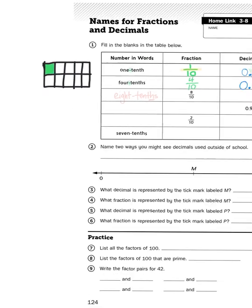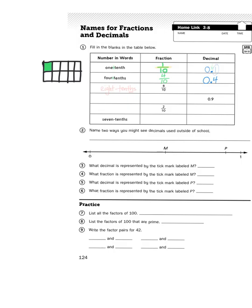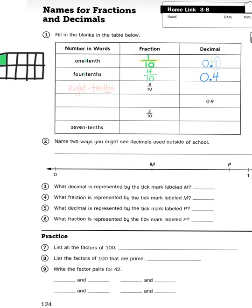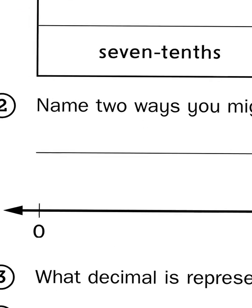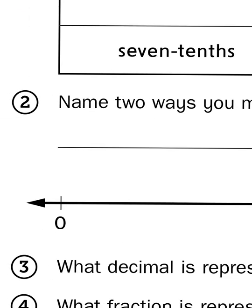Now then, let's take a look at some of these other parts. Number 2 says, name two ways you might see decimals used outside of school. Well, if you've ever been in a store, I bet you've come across all kinds of decimals because in our American economy, we like to talk about things in terms of dollars and cents. And oftentimes, retailers will advertise a price of an item and they'll say something like, it's $1.99.